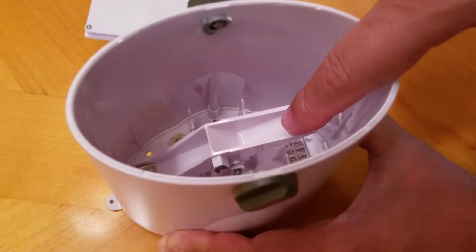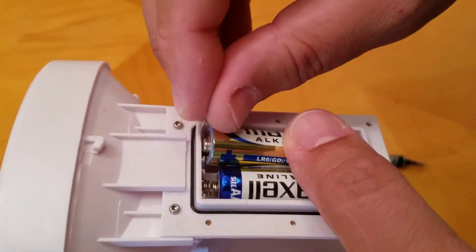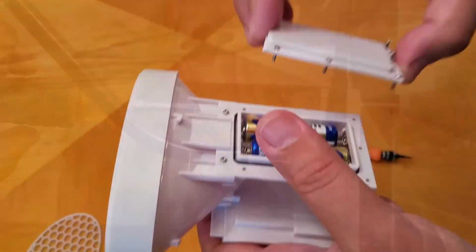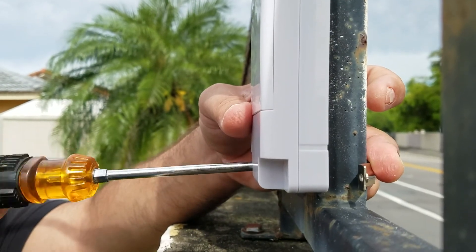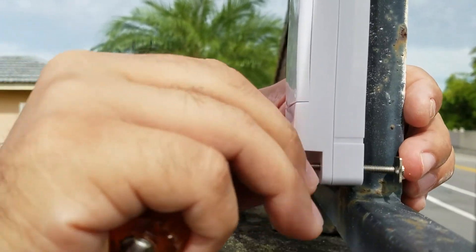The installation of the anemometer is fairly simple with the use of brackets included. It can be done with just a screwdriver. It's important to note that the manual states the official mounting location for anemometers is 10 meters or 33 feet above ground level in a clear, unobstructed location.